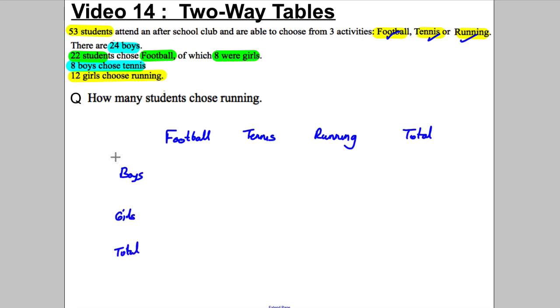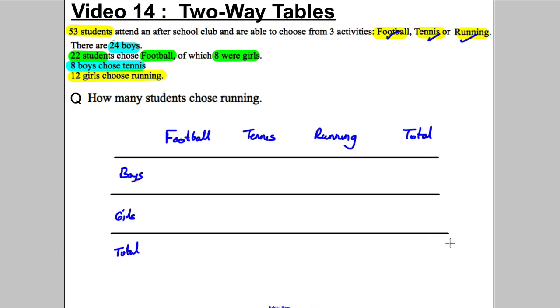Draw yourself a two-way table and we're going to use this to fill in all that data we're given in the question and find the missing pieces of data. Let's go through one by one and fill in what we've got. There are 53 students so that goes in the total. There are 24 boys so the total of the boys row must be 24.